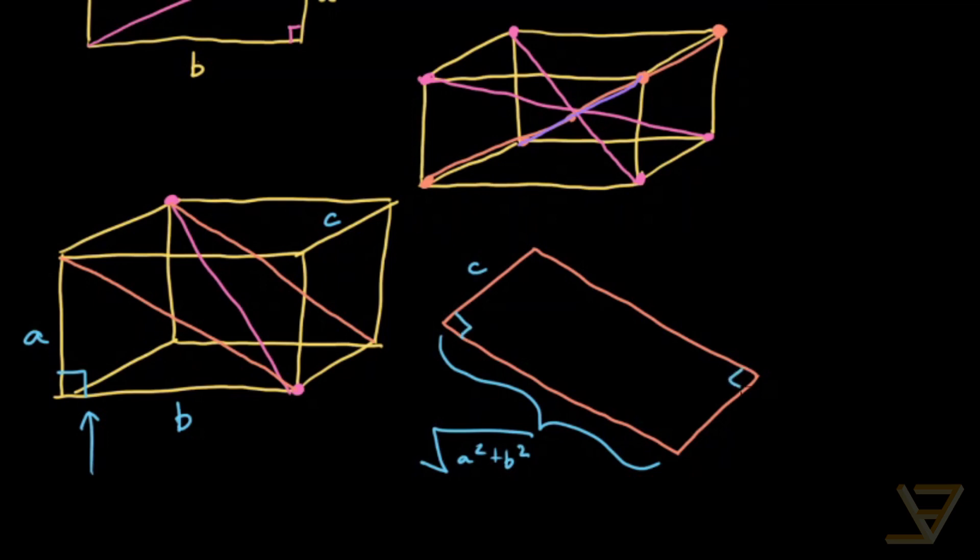And since this is a rectangle, we find that the length of the pink diagonal is equal to the following. It's C squared plus the square root of A squared plus B squared, squared.